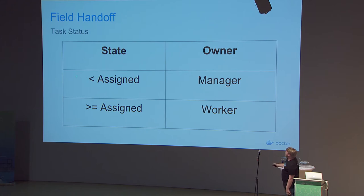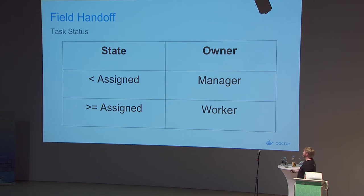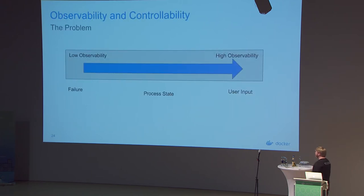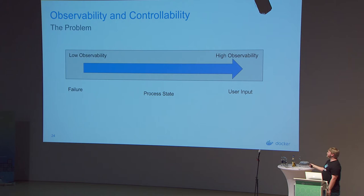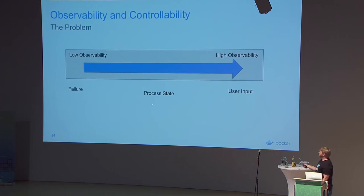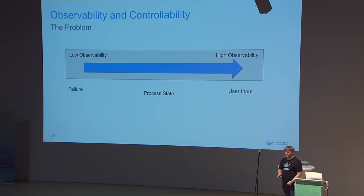When the task state is less than assigned, the task status is owned by the manager. When it's equal to or greater than assigned, the system of record is the worker. This process state on our observability continuum is mildly observable — it's in the middle because it's a remote operation, but we can observe it well and we have good data structures to do that.